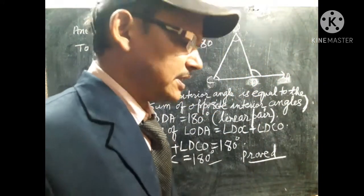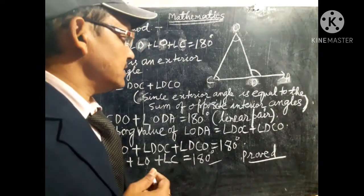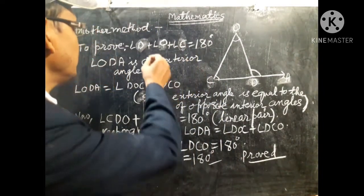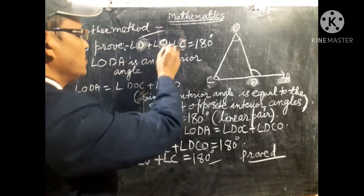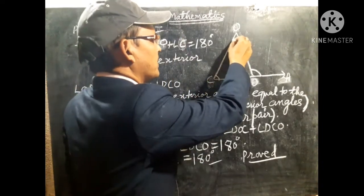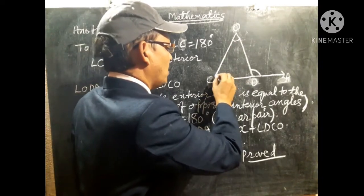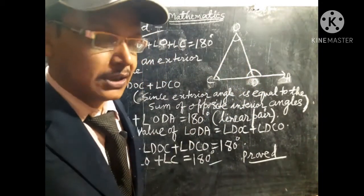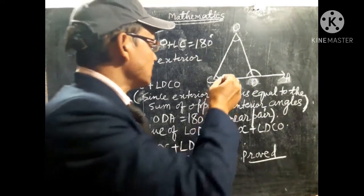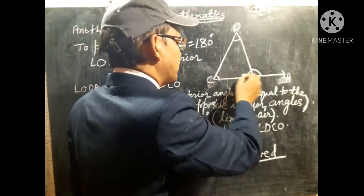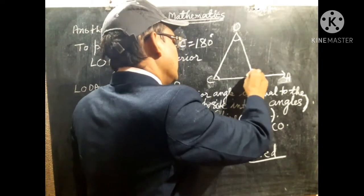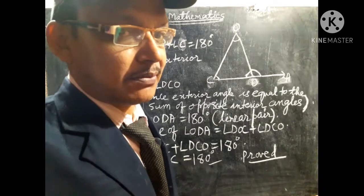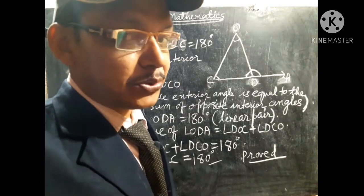This is geometry. In another method, how do we prove that the sum of all angles of a triangle equals 180 degrees? We need to prove angle O plus angle C plus angle D equals 180 degrees.